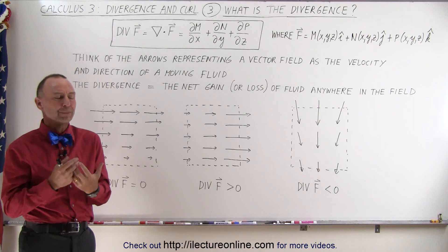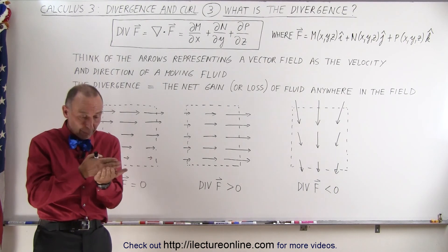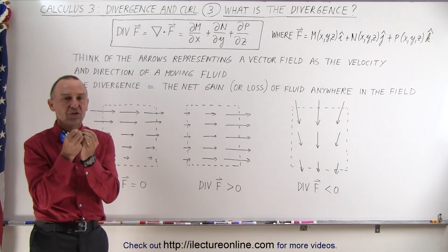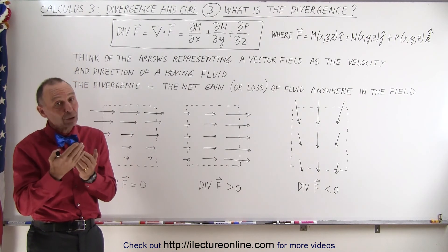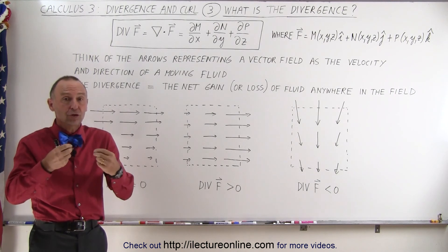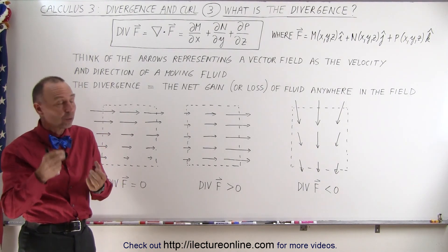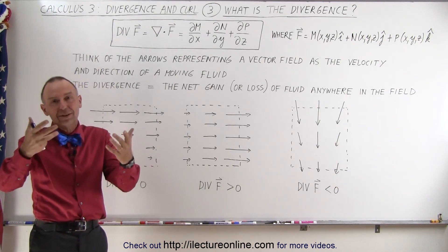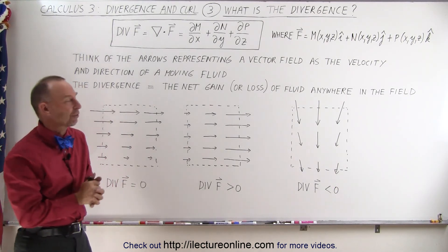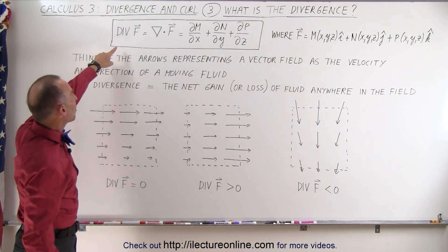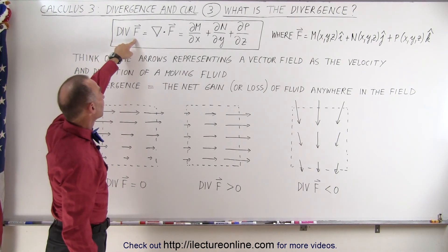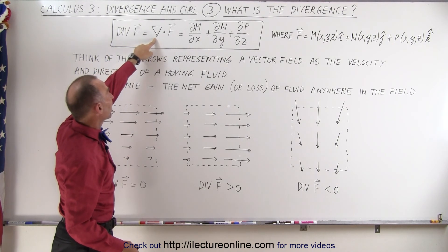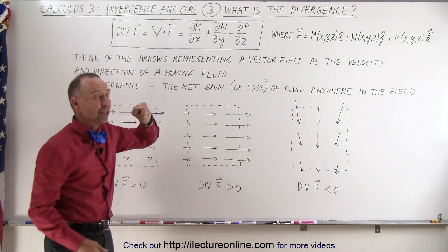But what does that really mean? If we operate on a vector quantity, we get a scalar — a singular magnitude, a singular number. That scalar could be a function of x, y, and z; it could change as we change x, y, and z, or it could be a constant. Mathematically, when we take the divergence of a vector field f, we write it as the upside-down triangle times the vector field.